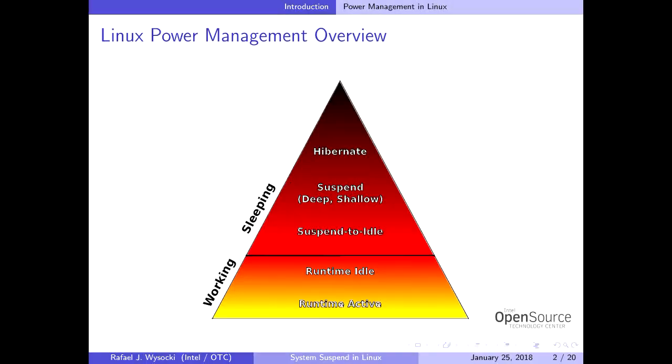This means there are two major power management strategies supported by the Linux kernel. The first is based on using sleep states — putting the system into a sleep state when we don't need to run user space processes. That's referred to as system-wide power management. The second strategy is based on manipulating different components in the working state depending on whether or not they are in use — referred to as working state power management. System suspend is part of system-wide power management.